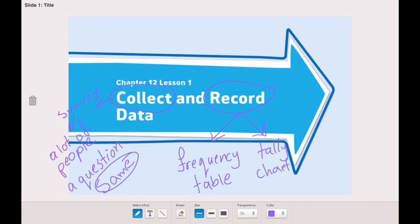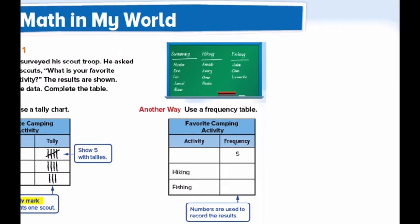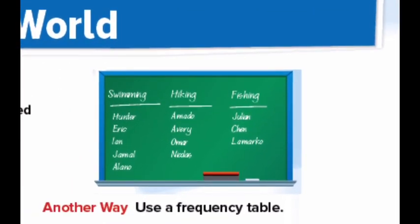Today we're going to learn all about these things. Open page 691 and let's go through example number one together. Mr. Alvarez surveyed his scout troop. He asked each of his scouts: what is your favorite camping activity? The results are shown. Now he's showing his data on this board. He has three activities: swimming, hiking, and fishing. He wrote the name of the scout who voted for each activity.